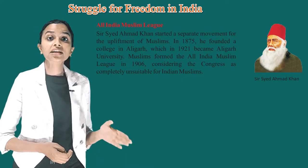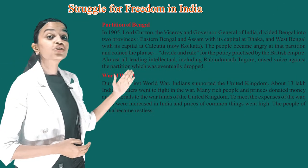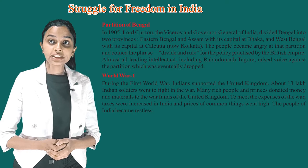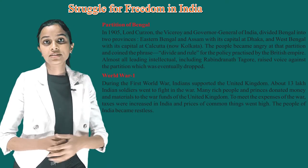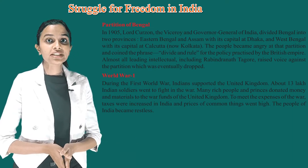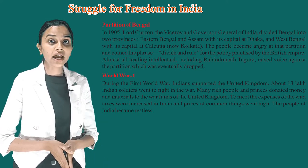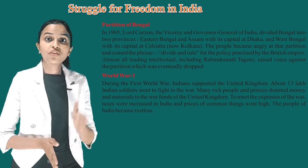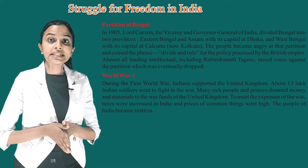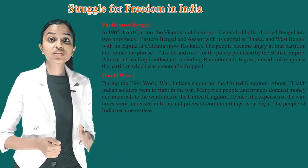Partition of Bengal in 1905: Lord Curzon, the Viceroy and Governor General of India, divided Bengal into two provinces — Eastern Bengal and Assam with its capital at Dhaka, and West Bengal with its capital at Calcutta (now Kolkata). The people became angry at this partition and coined the phrase 'divide and rule' for the policy practiced by the British Empire. Almost all leading intellectuals, including Rabindranath Tagore, raised their voice against the partition, which was eventually dropped.